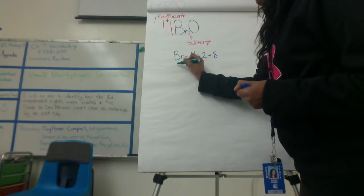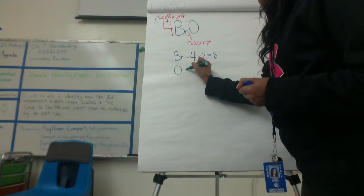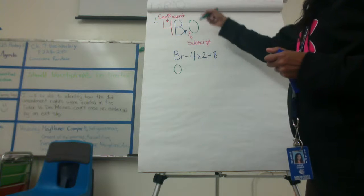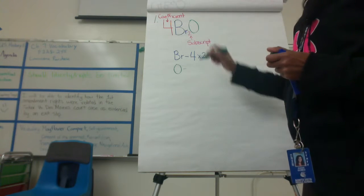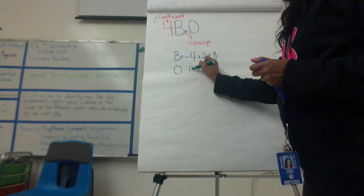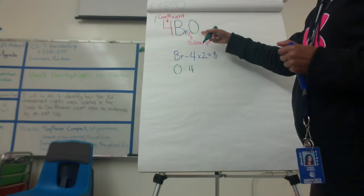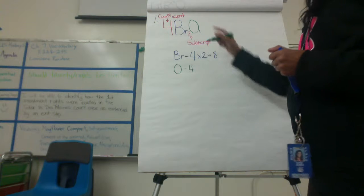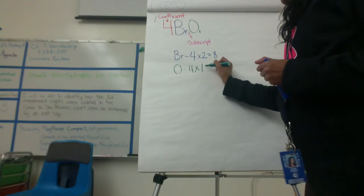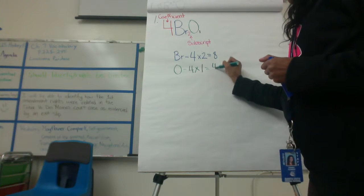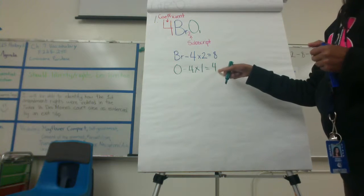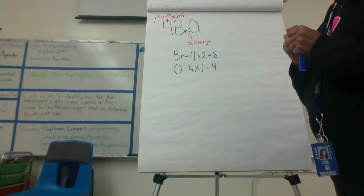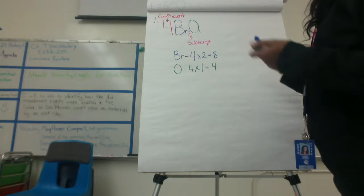Now I'm going to figure out how many oxygens there are. I'm going to do 4 times — there's nothing there, which means there's a 1 — so it's 4 × 1 = 4. There are four oxygens in this compound.